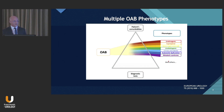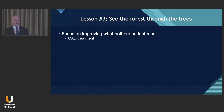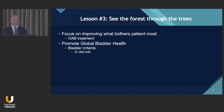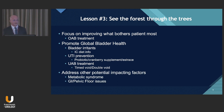In the future, we may see a paradigm shift in how we treat OAB patients, depending on characterization of the underlying bladder phenotype. Unfortunately, we don't have sensitive enough biomarkers currently to phenotype these patients. Lesson number three: see the forest through the trees. While I focus on improving what bothers the patient most, I'm not going to ignore promoting global bladder health. I'll discuss bladder irritants, UTI prevention strategies, address underactive bladder if present, and address metabolic syndrome, diabetes mellitus, and GI or pelvic floor issues.